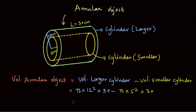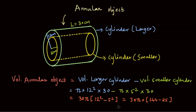Since the radii are 12 and 5, we have π times 12 squared and π times 5 squared. We can take π and 30 out of the bracket by writing 30π times (12 squared minus 5 squared). This equals 30π times (144 minus 25), giving us 30π times 119, which is 3570π cm³. And this is how we can find the volume of the annular cylinder.